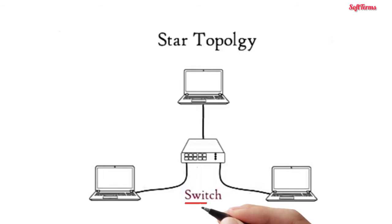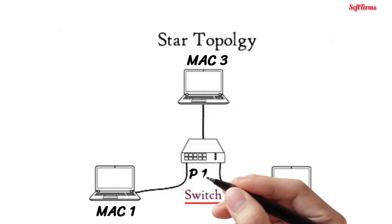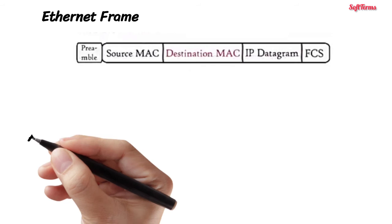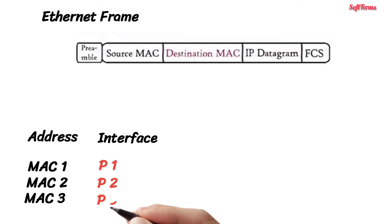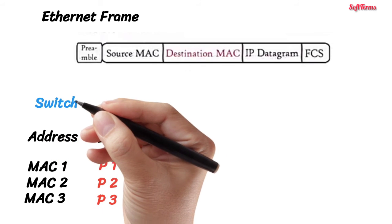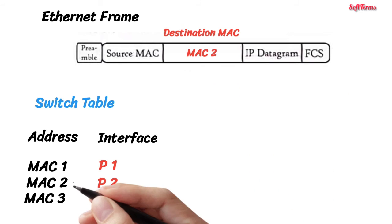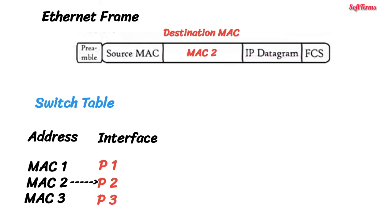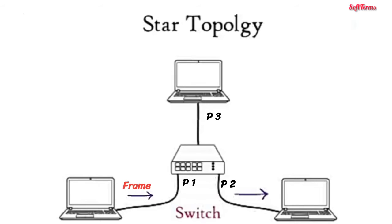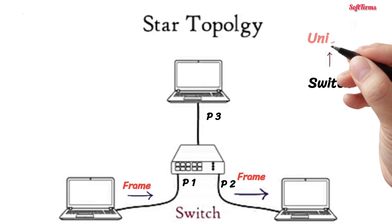To overcome these limitations, a switch is used as a central device. Because a switch is a more intelligent device than a hub, it stores the MAC addresses of devices connected to its ports — this is called a switch table. Since the data frame it receives has a destination MAC address, and the switch knows that the device with MAC address MAC2 is connected to port P2, the switch forwards the received data frame to port 2 only. Hence, instead of broadcasting, the switch unicasts the frame.